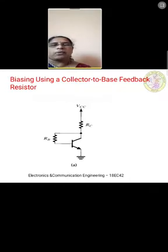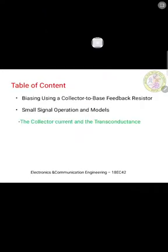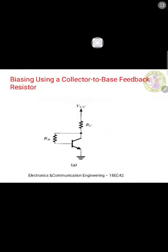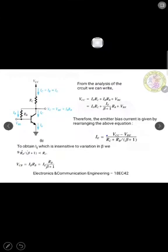Now let us look into the analysis part of this circuit and how the IE equation can be derived, and what are the factors on which the emitter current is going to depend. Coming to this analysis equation: on the circuit diagram all currents are mentioned, that is IE equals IC plus IB. Similarly, the base current IB is flowing through Rb, and there is an emitter current IE, and here you can see Vbe, the voltage across base and emitter.